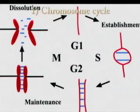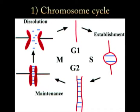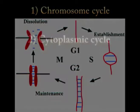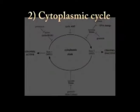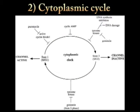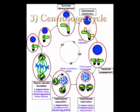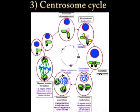The cell cycle involves the following three cycles: 1. Chromosome cycle, 2. Cytoplasmic cycle, 3. Centrosome cycle.